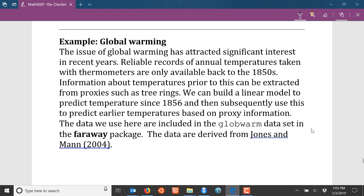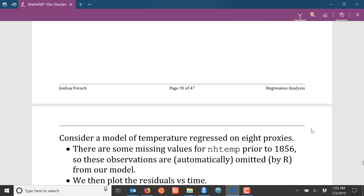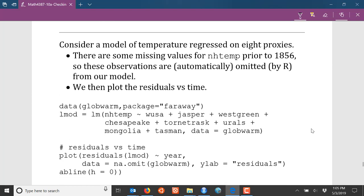The data that we're going to use are available in the globwarm data set in the R faraway package, and the data in that data set are derived from work by Jones and Mann in 2004. In this data set we're going to regress our temperature variable on the eight different proxy variables. There are some missing values that we'll need to account for.